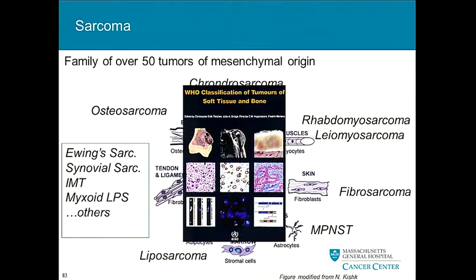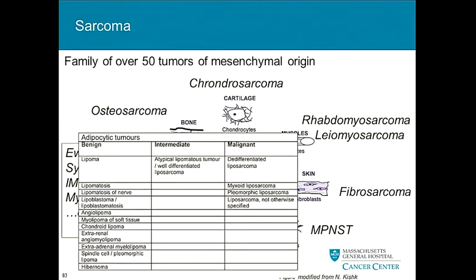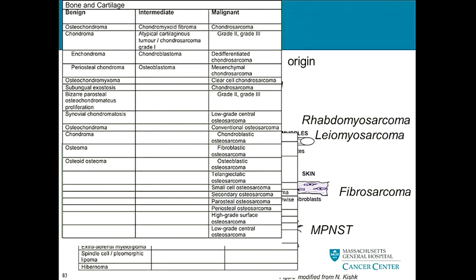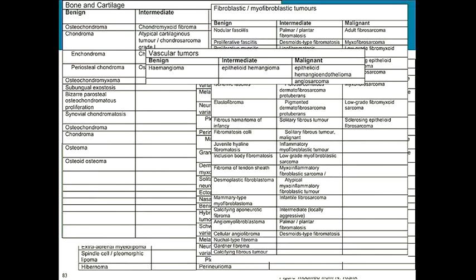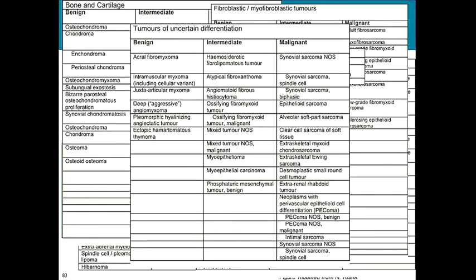To help organize these diseases, we have the WHO classification book — a 200 to 300 page book that gets very complicated very quickly. Just taking fat-derived tumors as an example, we have benign, intermediate, and malignant subtypes, each with different histologies. Then there's bone and cartilage, nerve sheath tumors, myofibroblastic tumors, vascular tumors, and tumors of uncertain differentiation. You can see quickly how complex this gets.